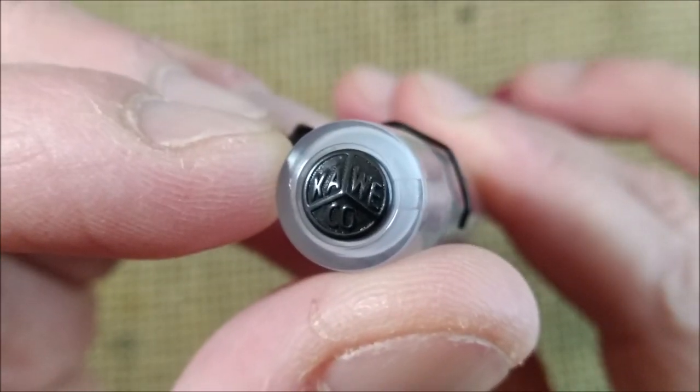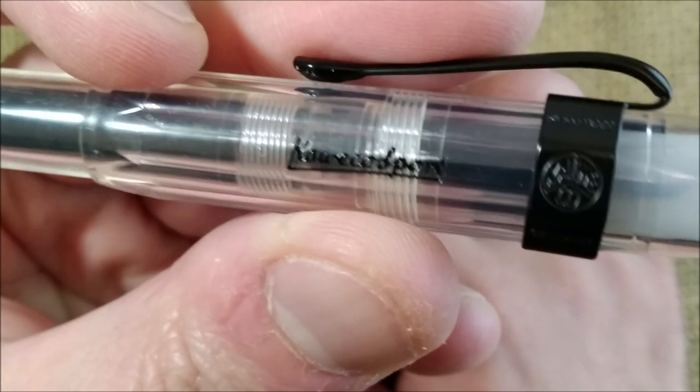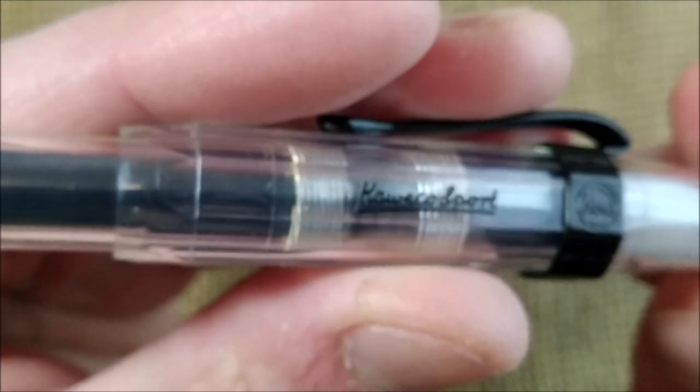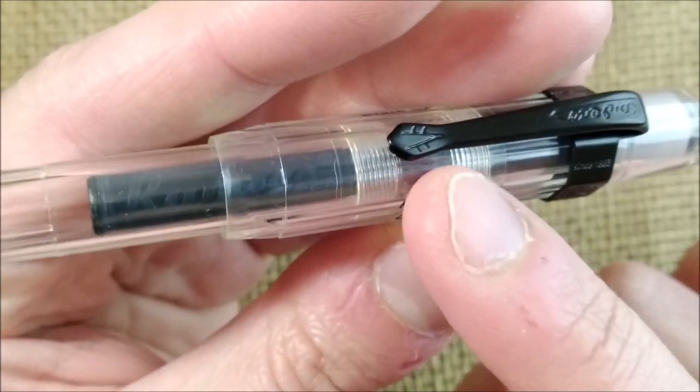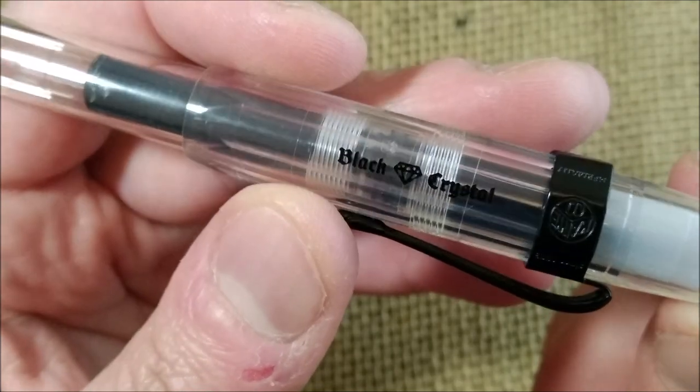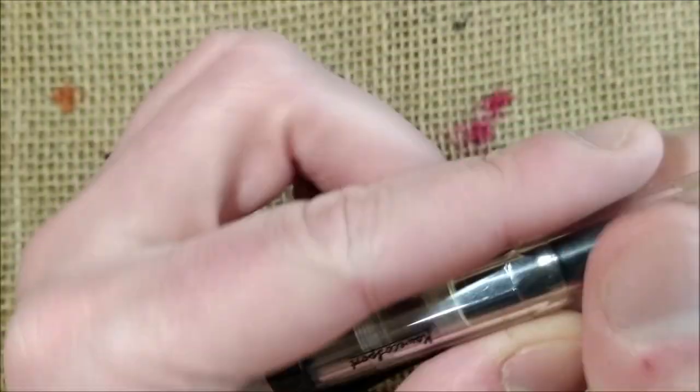It has the black name Kaweco Sport there on the side. It is usually silver or gold. It has a black retro style clip and it has black crystal on the other side to name this special edition.